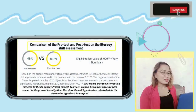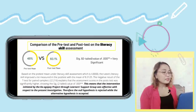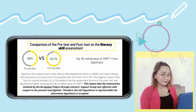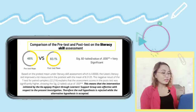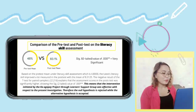In comparing the pre-test and post-test on literacy and numeracy skills, the researchers used the ACERT tool. Based on the pre-test mean under literacy skills assessment of 4.800, literacy skills improved significantly in the post-test with a mean of 8.3125. The negative result of the paired t-test explains that post-test scores were significantly higher, showing a significant two-tailed value of 0.000. This means the intervention by the Kaagapay Project through the learner support group was effective. Therefore, the null hypothesis is rejected while the alternative hypothesis is accepted.